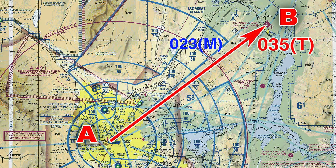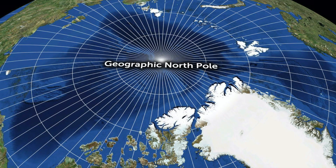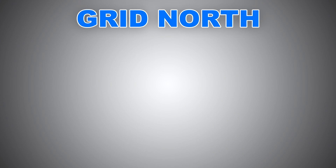Now let's move to grid north. Why do we need it? When navigating at or near the poles — whether north or south — both meridians, which are lines of longitude, and the magnetic declination change very rapidly, to the point that navigating based on true north or magnetic north becomes very challenging. This is why we came up with a new form of navigation reference when operating near the poles, called grid north.